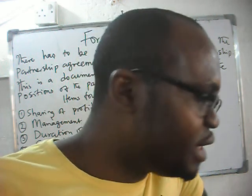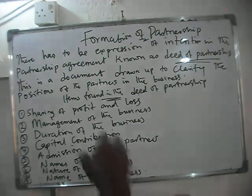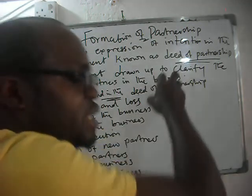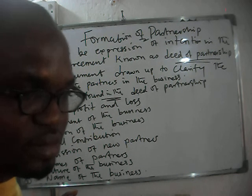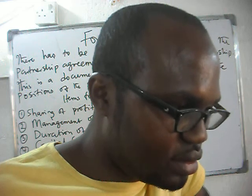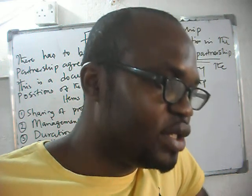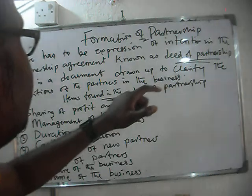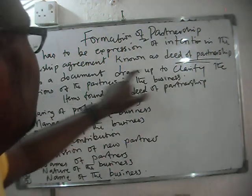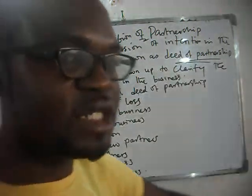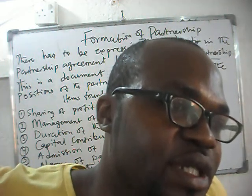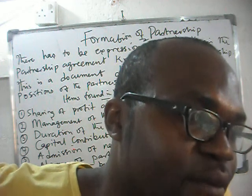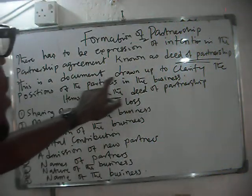It's not only two people — it could be up to 20. There has to be an expression of intention: both of you have to express your intention to form the partnership. You can't force people to form a partnership; they have to come together by themselves. This expression of intention goes into the partnership agreement, known as the deed of partnership.